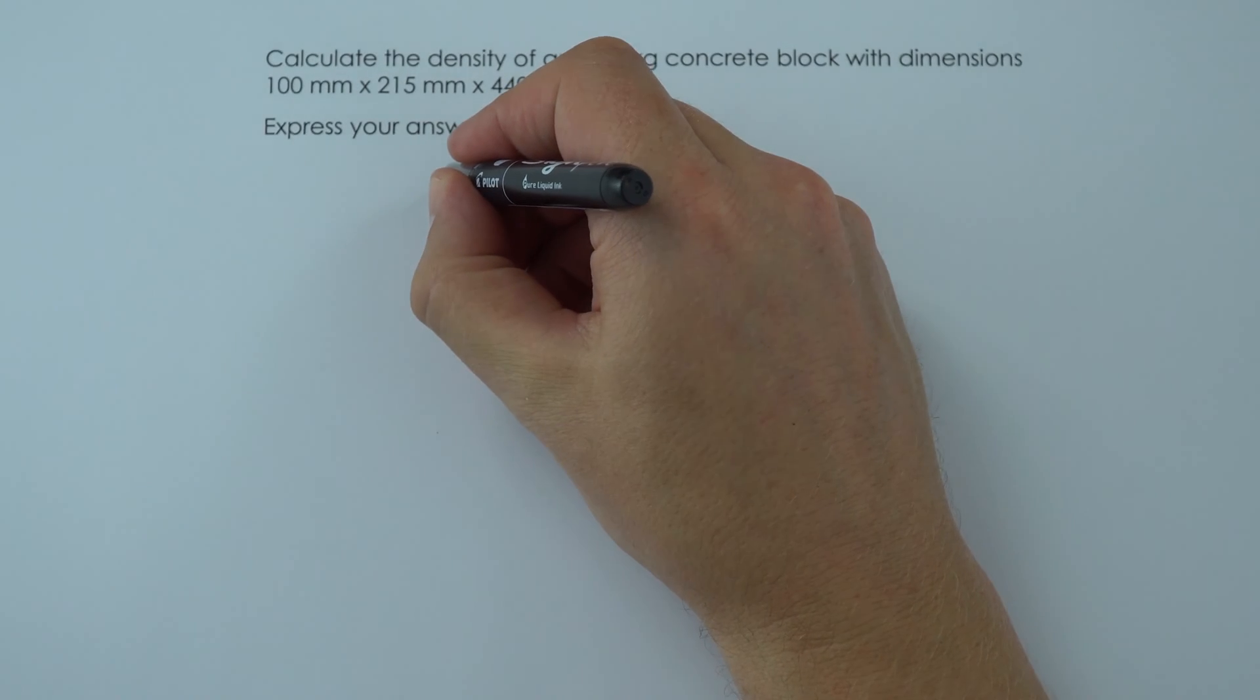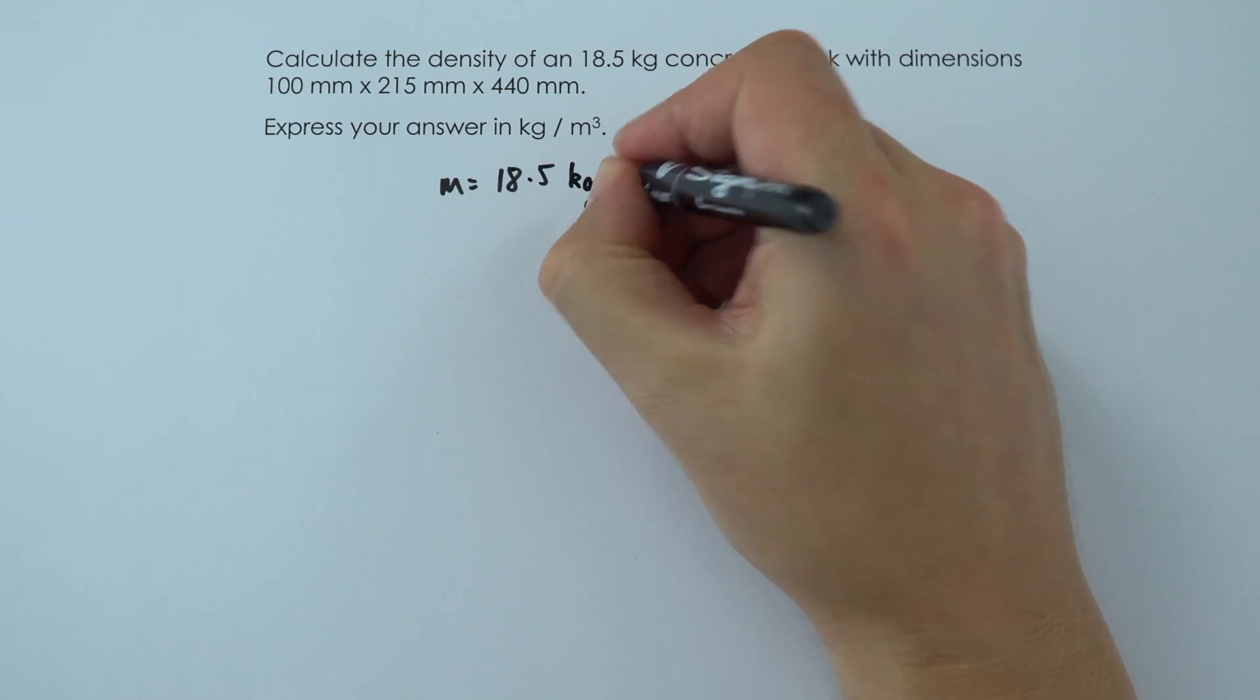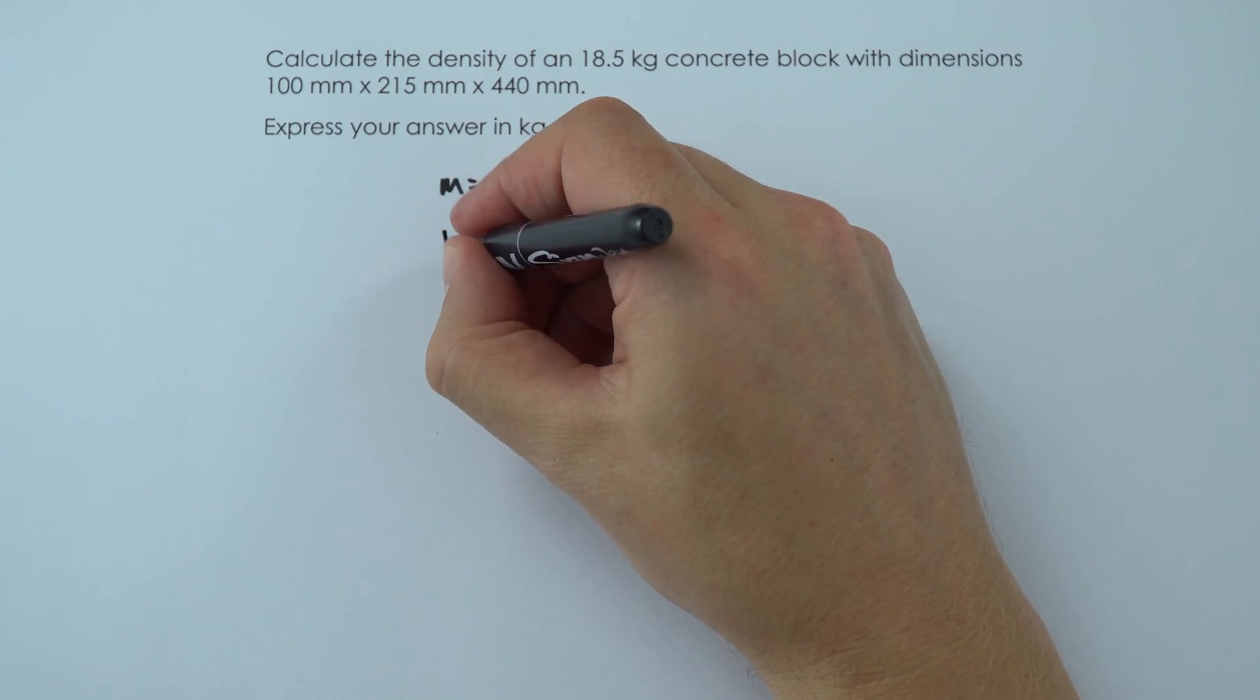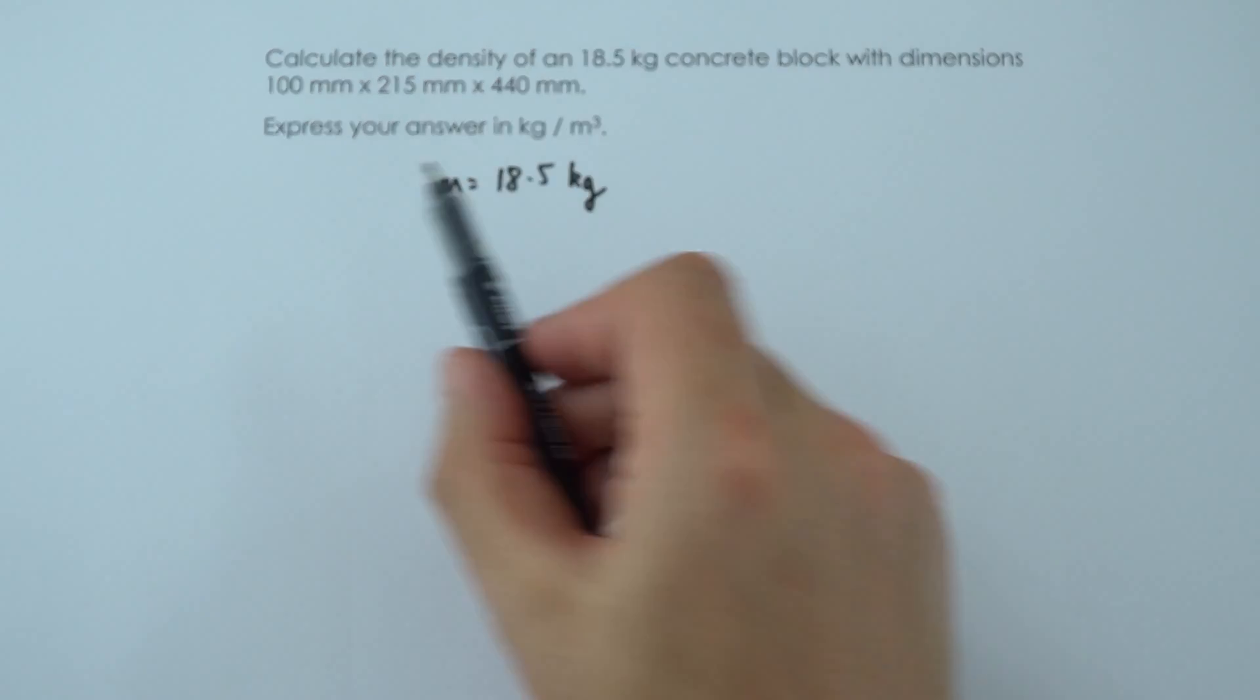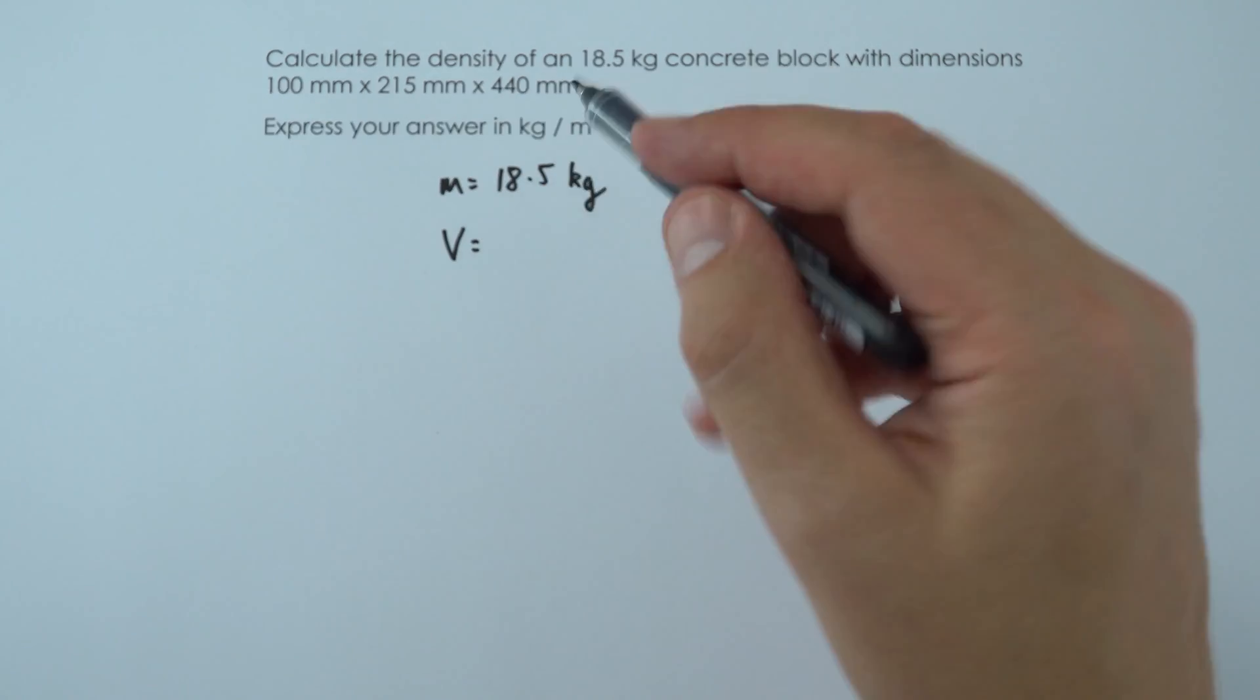So we can see that the mass is equal to 18.5 kilograms, but then we need to work out our volume in cubic meters. So the volume, capital V, is going to be equal to all of these dimensions multiplied by each other, so that's the length times the width times the height.